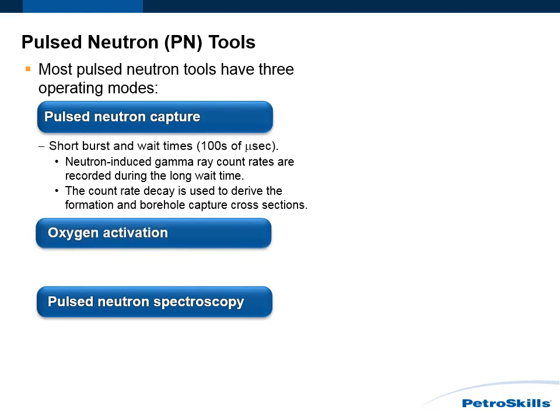Oxygen Activation mode uses a long neutron burst and a long wait time on the order of seconds. The neutron burst activates oxygen in the water, and the detector measures the time it takes this activated water to reach the detector. This provides a water velocity from the activated water.